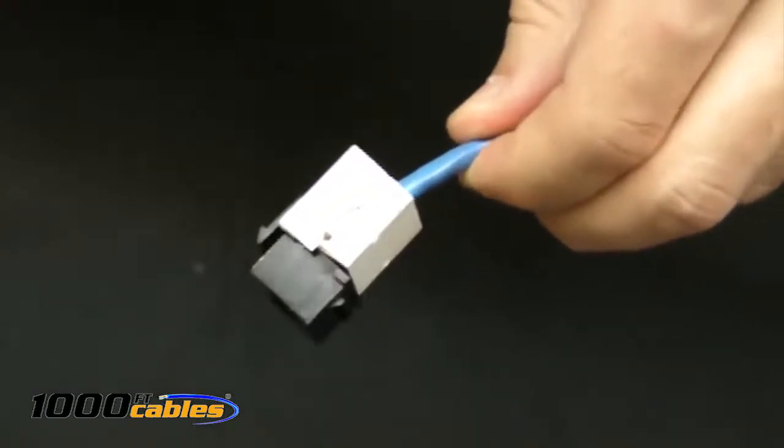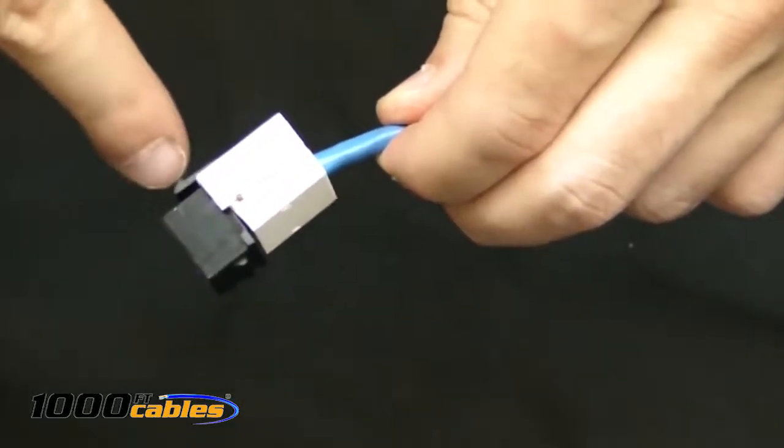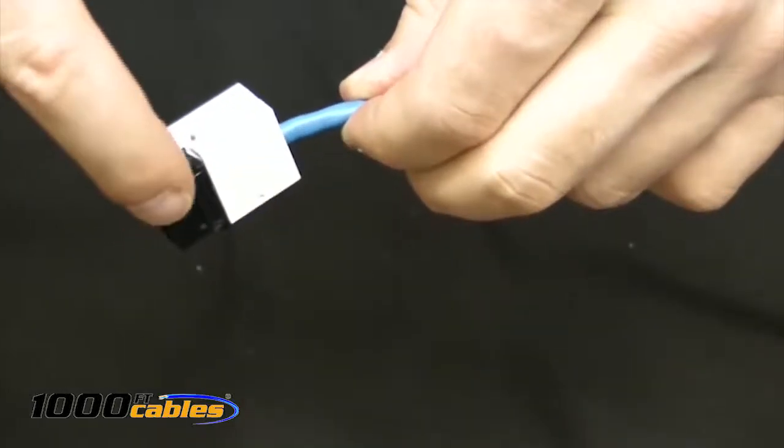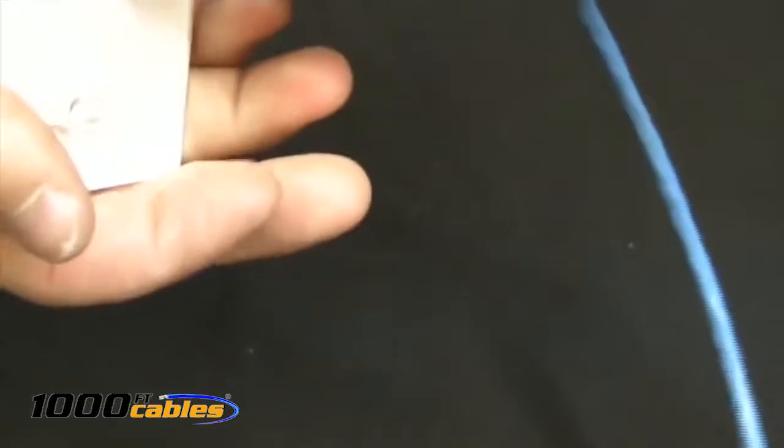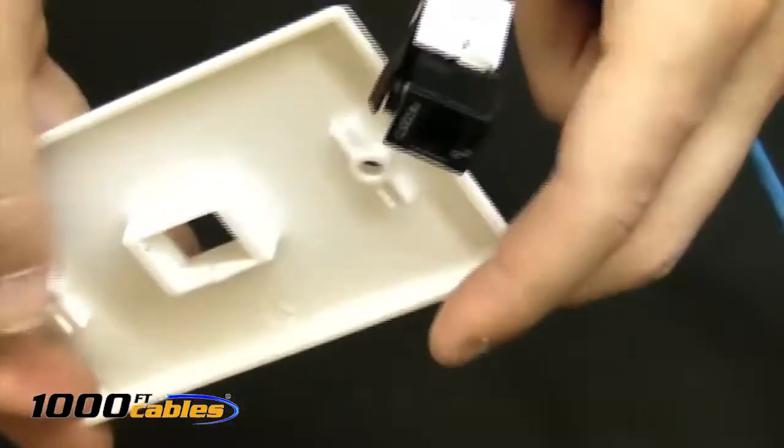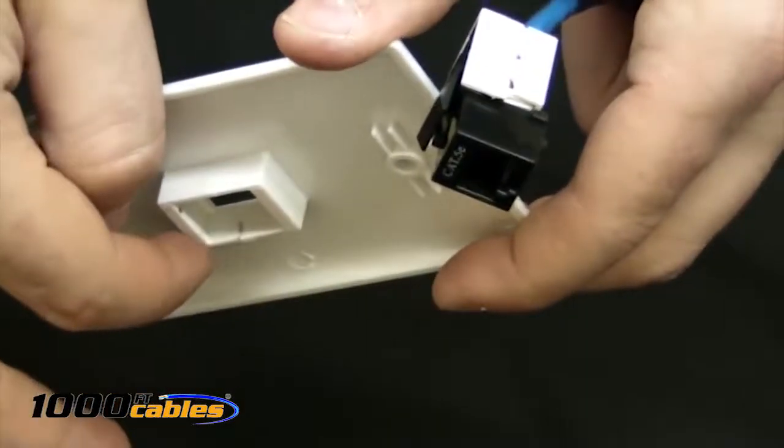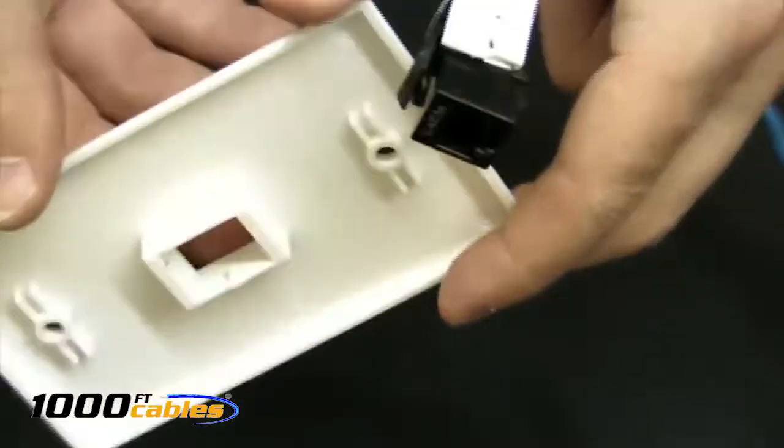You're going to take your Cat5 keystone jack, and if you notice here, there's two things. On the top here, there's a clip that's going to securely hold this in place, and on the bottom here, there's a little nub, which is going to just slide into a slot right on the inside of this jack, which you can see right there.